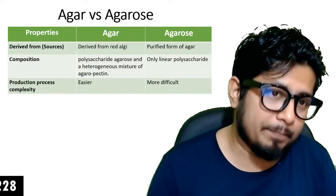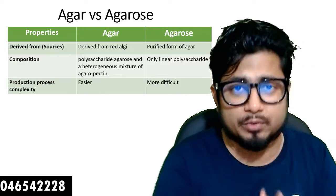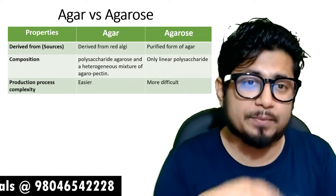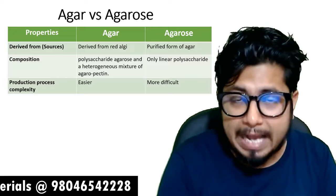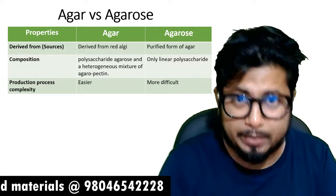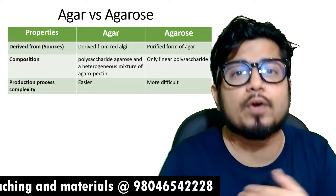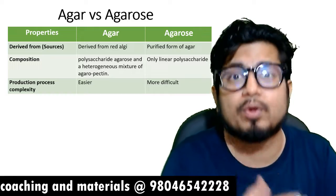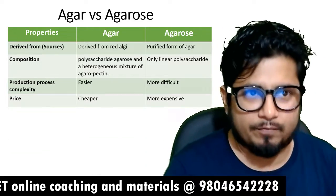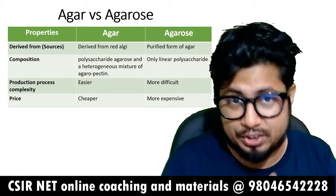The third parameter is the production process and its complexity. Agar production is much easier — it is simple to obtain agar from red algae. Agarose requires further purification of agar to produce only the linear polysaccharide, making it a more complex and difficult process.